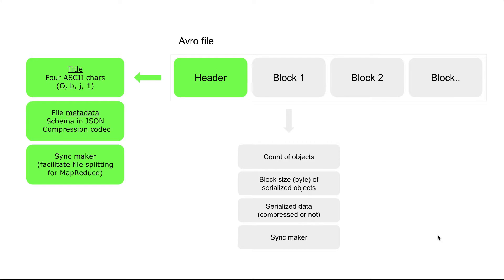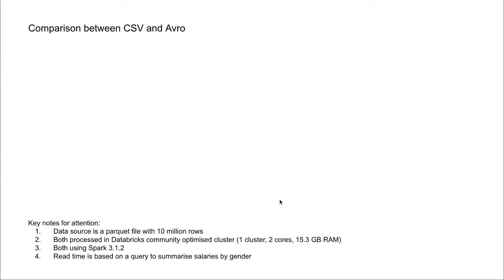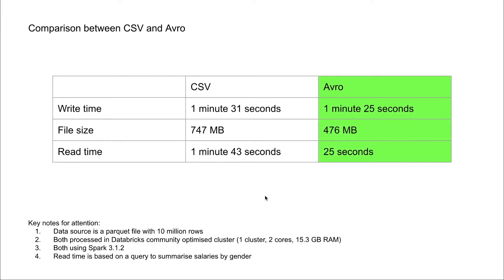To show you whether Avro is a good file format to choose, I've done a demo comparison between CSV and Avro. Some caveats first: I'm testing using the same data source in a Parquet file with 10 million rows. Both are processed in a Databricks community optimized cluster — one small cluster, two cores with 15 GB RAM — using Spark 3.1.2. The read time is based on a simple query to summarize salaries by gender. Here is the comparison showing write time, file size, and read time.